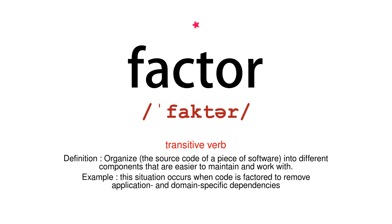Transitive Verb Definition: Organize the source code of a piece of software into different components that are easier to maintain and work with. Example: This situation occurs when code is factored to remove application and domain-specific dependencies.